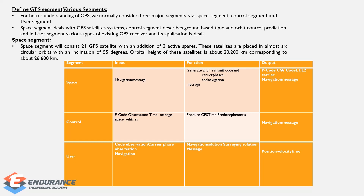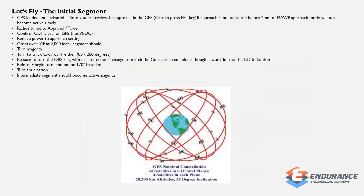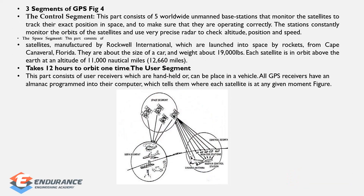The GPS Space Segment consists of 21 GPS satellites plus 3 active spares, with a 55-degree inclination. The orbital height is about 20,200 km and the orbital radius is about 26,600 km. The Control Segment has five worldwide unmanned base stations. One orbit takes approximately 12 hours.